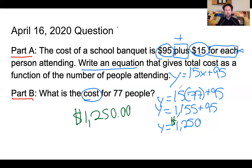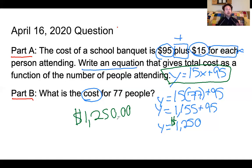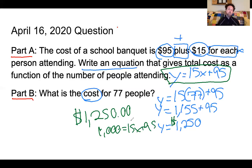Part A was to write the equation — done. Part B was to solve given a set number of people. Now it's also possible to start with a cost — say we have a budget of $1,000 — and solve for the number of people. Starting with $1,000 in the equation 15x plus 95, we could solve backwards to figure out the maximum number of people we could host at this banquet. But that's not what was asked, so we don't have to.